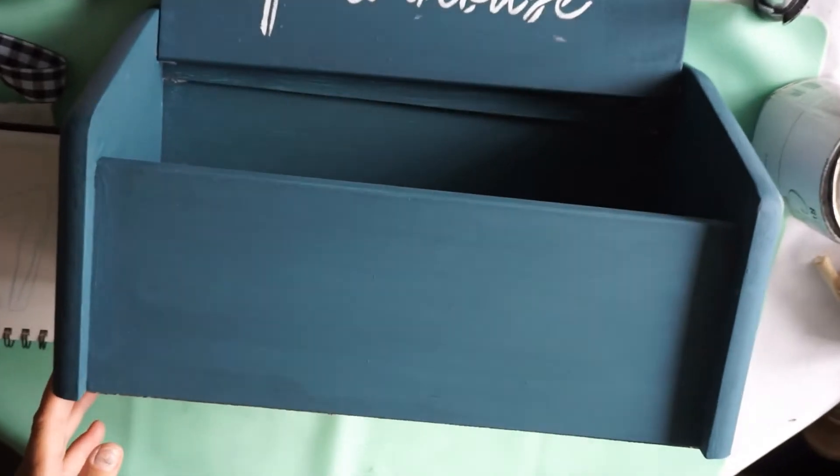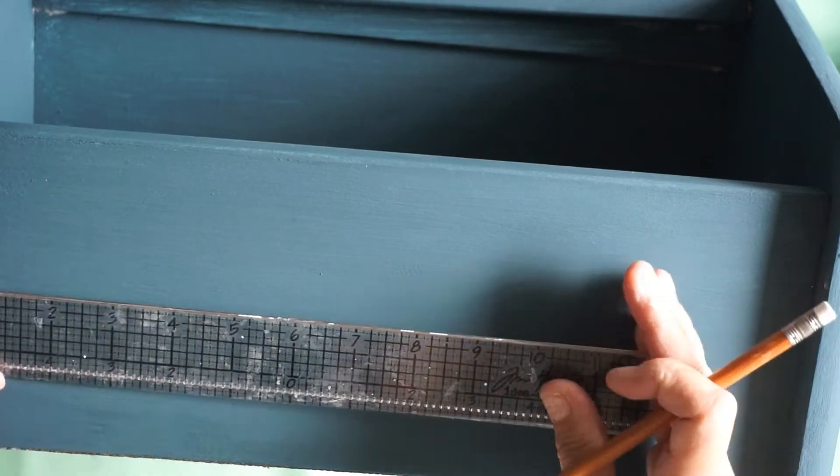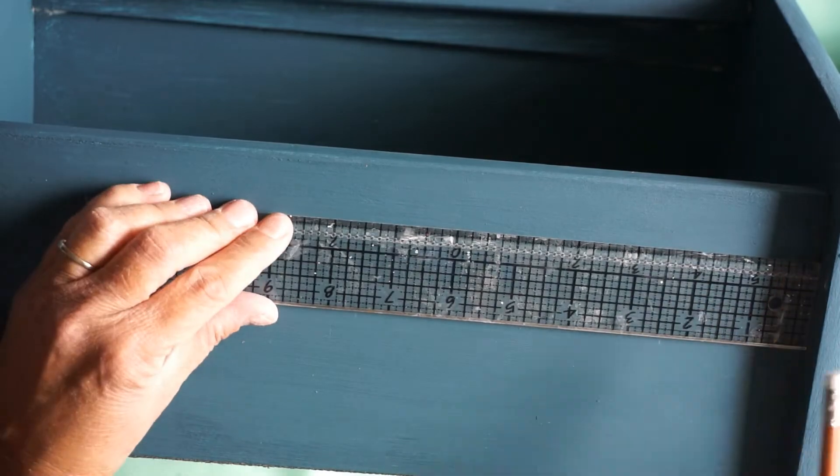And then for the life of me, I could not, I could have swore I had a stencil that said number seven. And I didn't. I didn't feel like using vinyl. I just kind of wanted it with all paints, that's why I wanted a stencil.